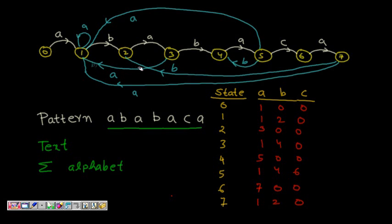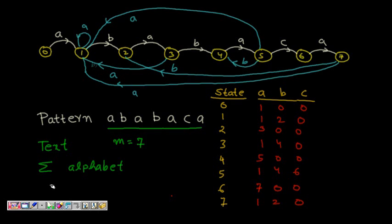Let's say we have some text and we need to find the pattern 'a b a b a c a', which is of length 7. We start here — for example, if we have a text beginning with 'a b c'.